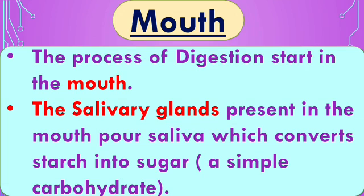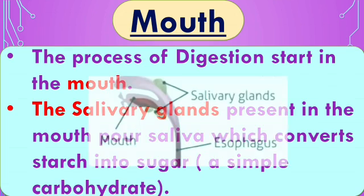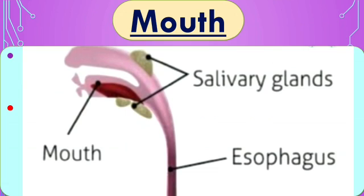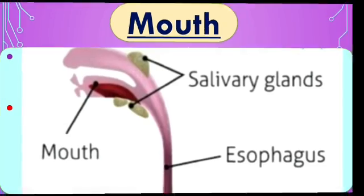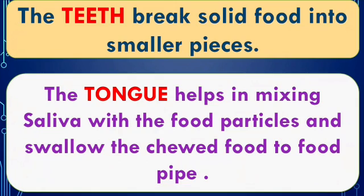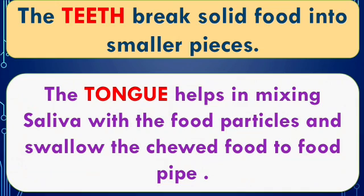The salivary glands present in the mouth pour saliva, which converts starch into sugar — that is, it converts a complex carbohydrate to a simple carbohydrate. See in the picture the salivary glands that secrete saliva in the mouth. When we take a bite of food, our incisor teeth and molar teeth both help in chewing — the molar teeth crack and grind the food into smaller pieces.